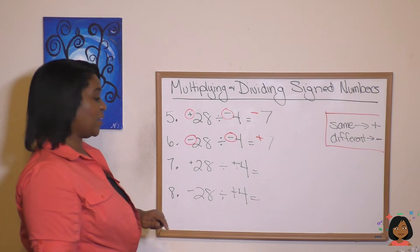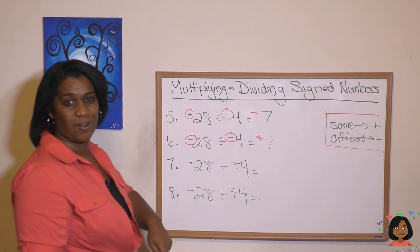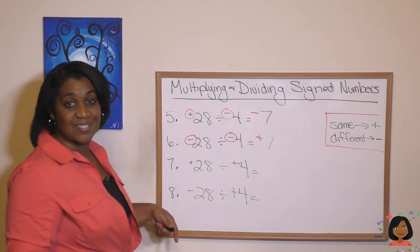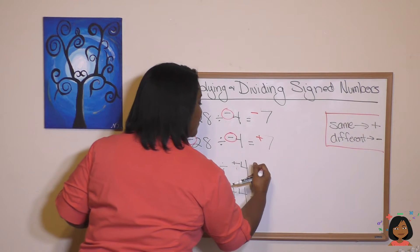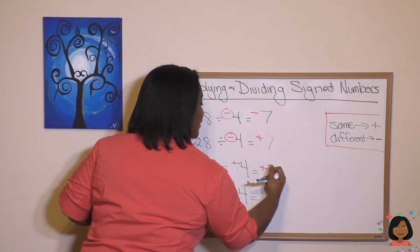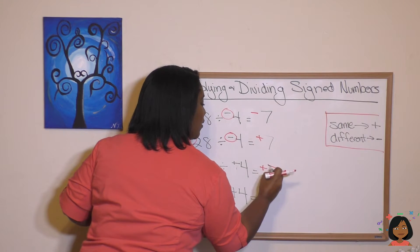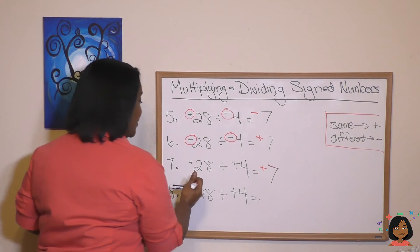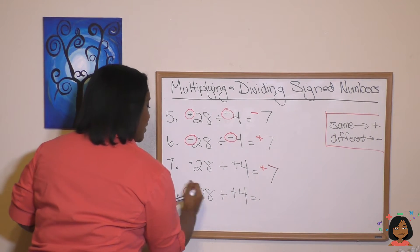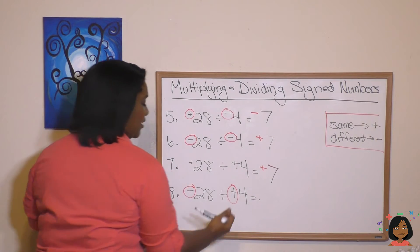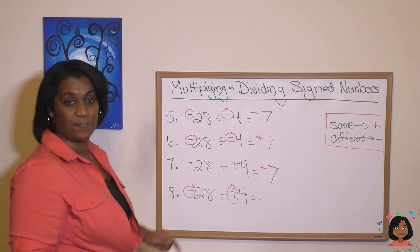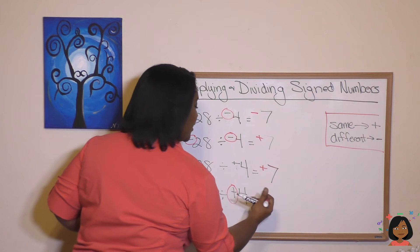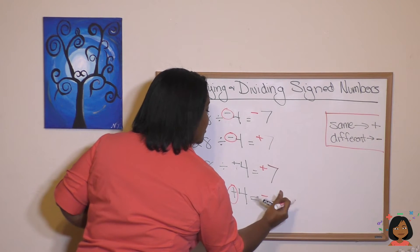Positive 28 divided by positive four — same signs — it'll be positive seven. And a negative 28 divided by a positive four — we have different signs — so the answer is going to be a negative seven.